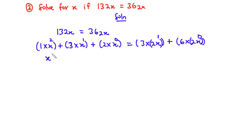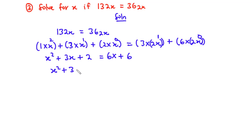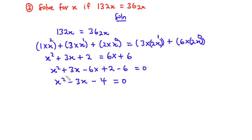Simplifying: x squared plus 3x plus 2 equals 6x plus 6. Transposing the right-hand side terms to the left gives x squared plus 3x minus 6x plus 2 minus 6 equals 0, which becomes x squared minus 3x minus 4 equals 0. The coefficient of the x squared term is 1 and the constant is negative 4. We need factors of negative 4 that add up to negative 3 and multiply to negative 4.